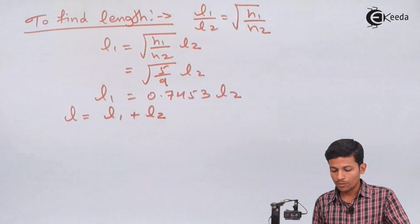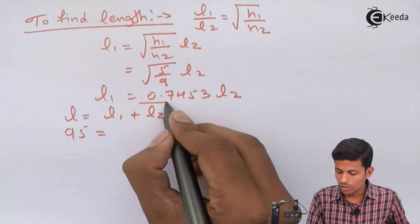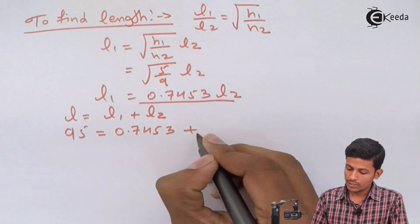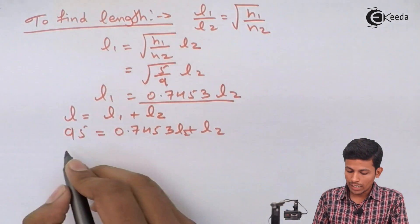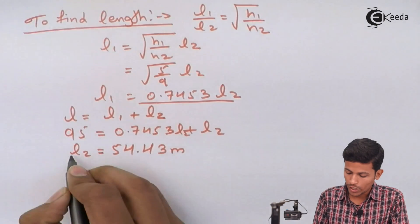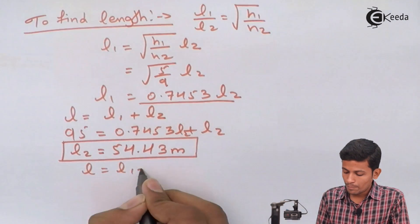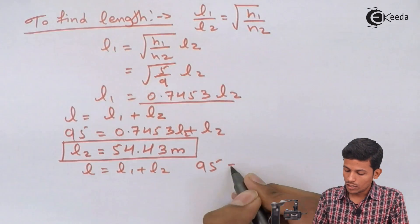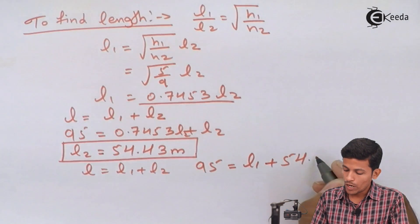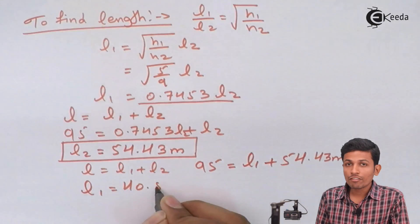Since L = 95 meters, substituting: 95 = 0.7453 L2 + L2. Solving, L2 = 54.43 meters. Then from L = L1 + L2: 95 = L1 + 54.43, giving L1 = 40.57 meters.